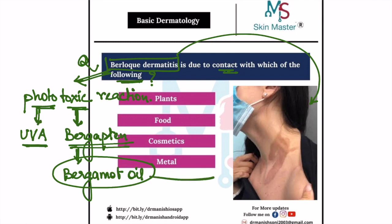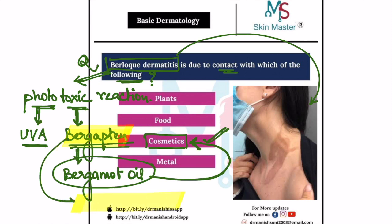This oil is generally used in various perfumes, deodorants, fragrances, and cosmetics. That's why the answer here is cosmetics. This is actually psoralen — 5-methoxypsoralen — and as you know, this is a photoactive component, so on exposure to ultraviolet irradiation, such pigmentation can be seen.